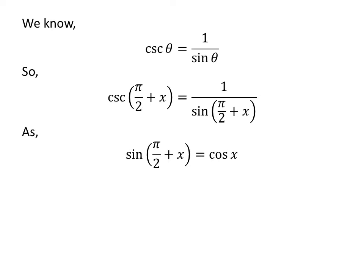As we know, the trigonometry identity sine of half of pi plus x is equal to cosine of x. The proof of this trigonometry identity has been explained in the video appearing in the upper right corner. The link of the video has also been mentioned in the description section.